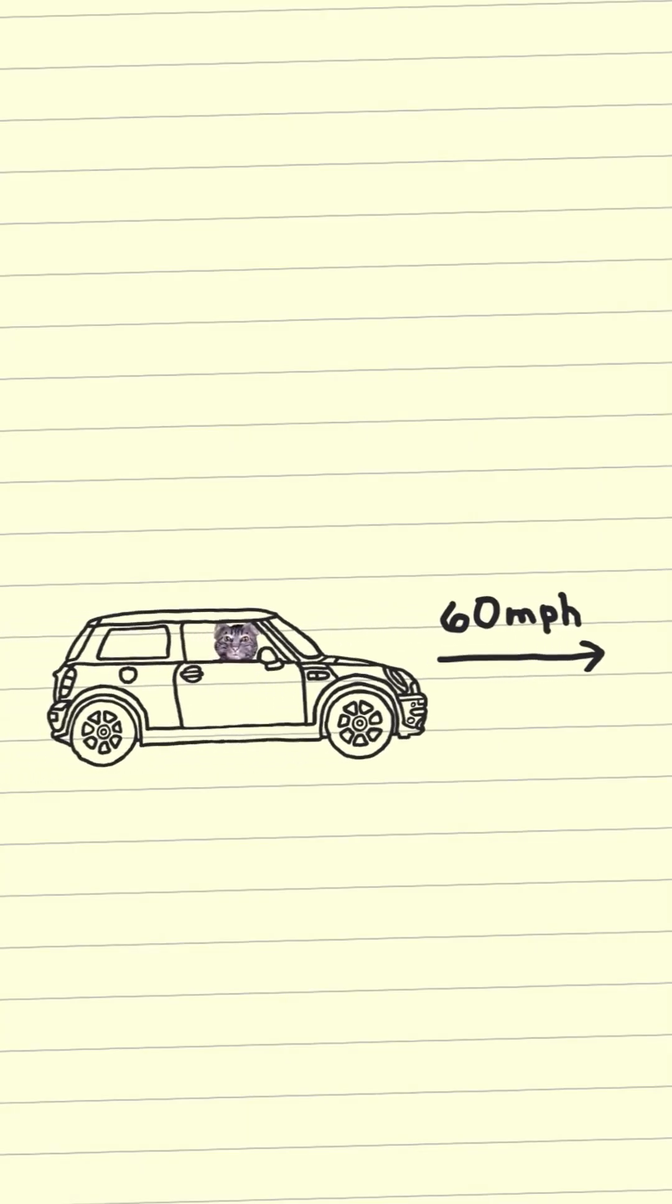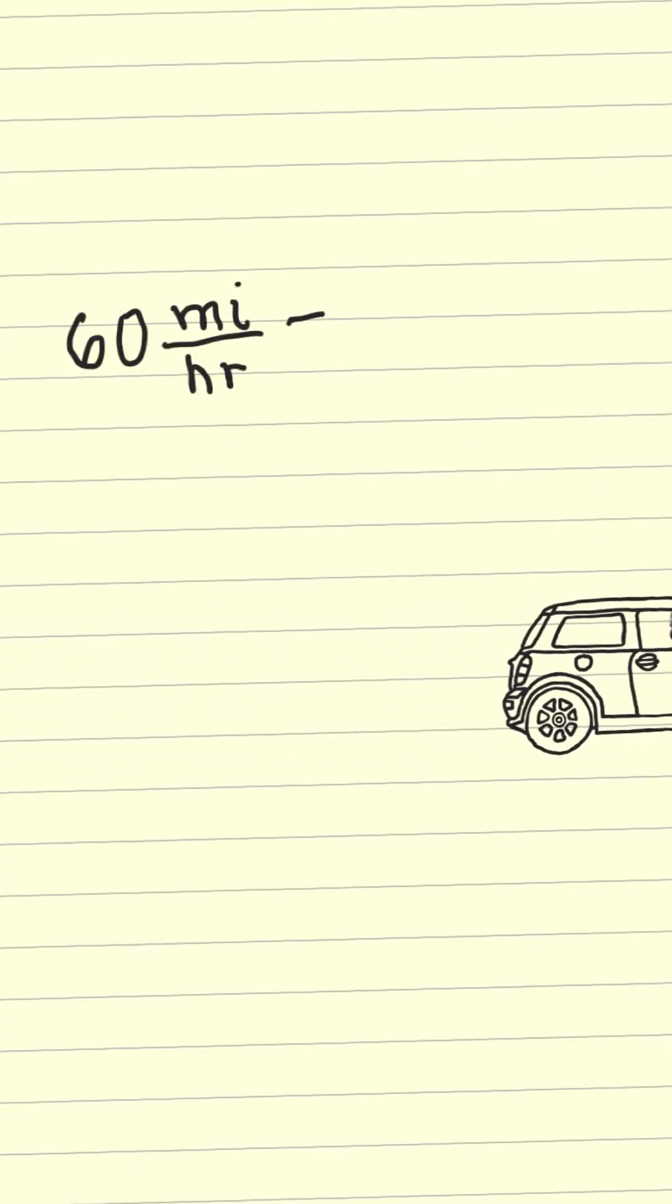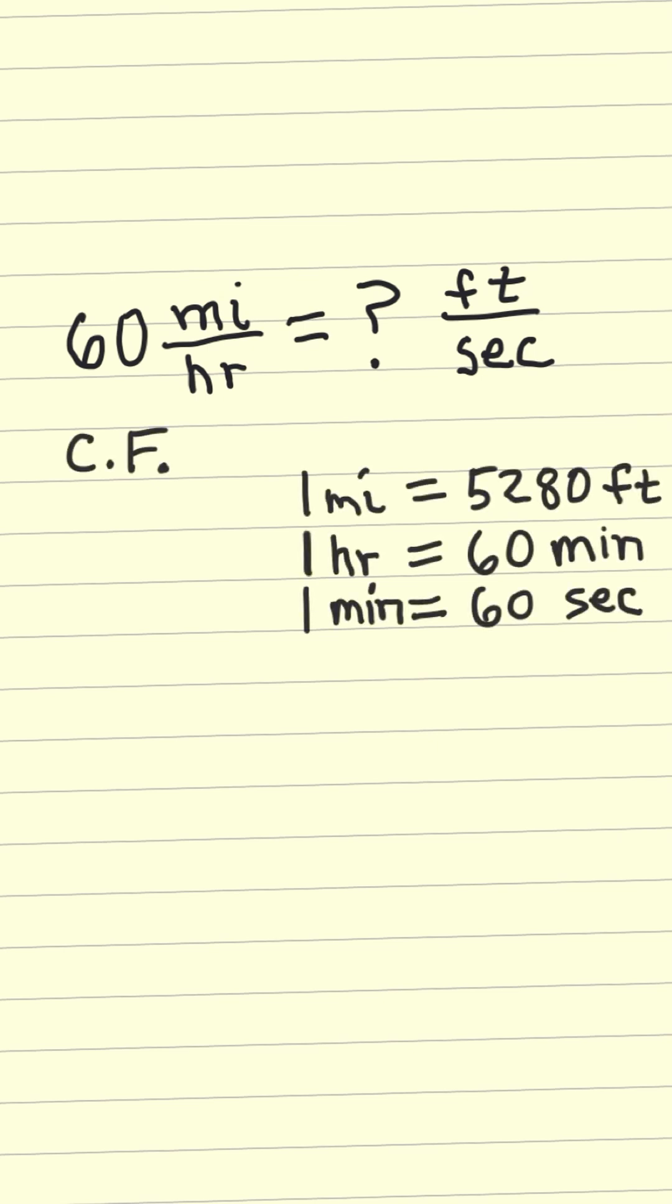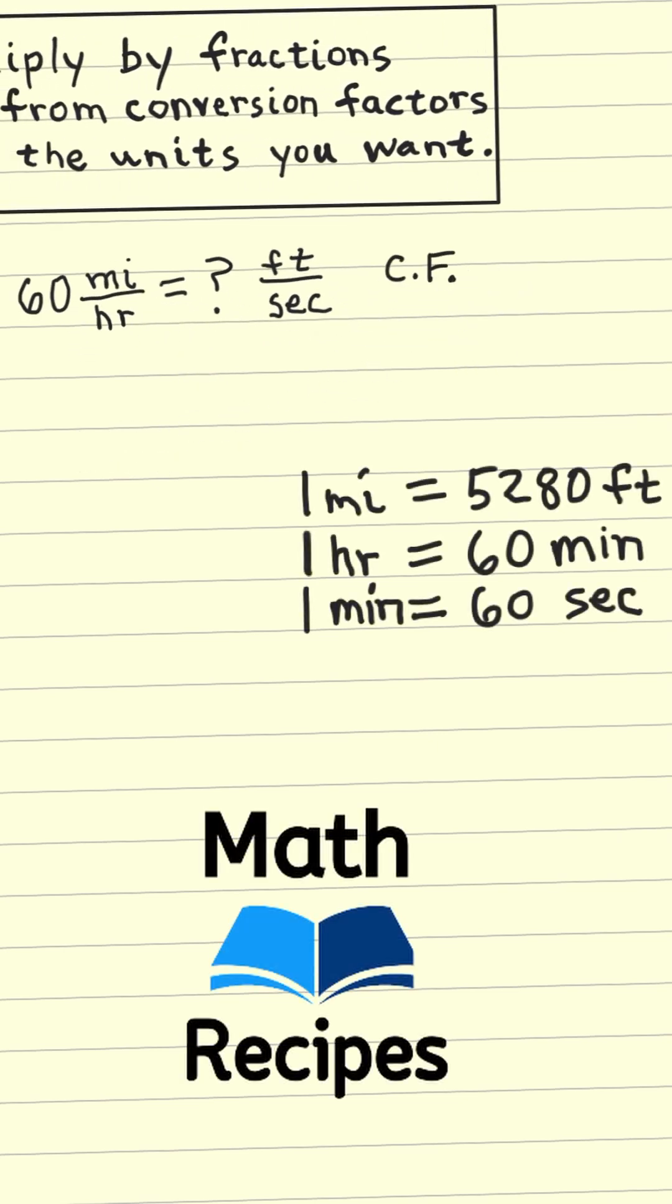A car is on cruise control and is going down the road at 60 mph. What is this in feet per second? We will use these conversion factors and this recipe for changing units.